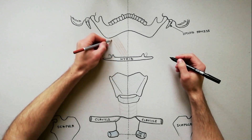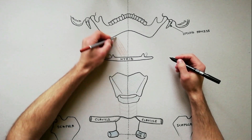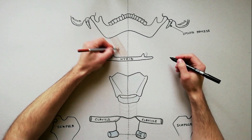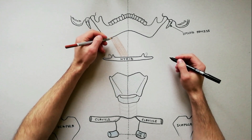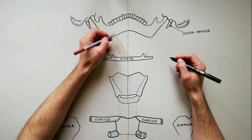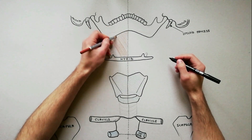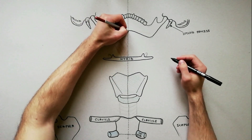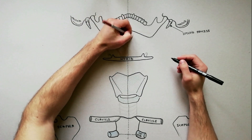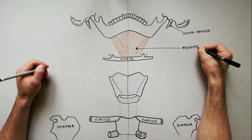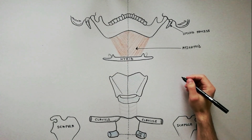The posterior fibers are inserted into the body of the hyoid bone. The medial fibers of the two mylohyoid muscles unite in a midline raphe, where the two muscles intermesh.